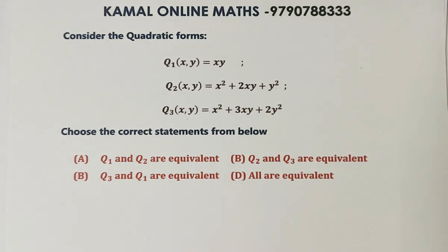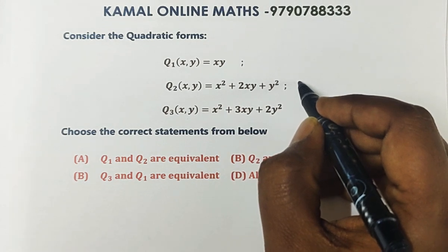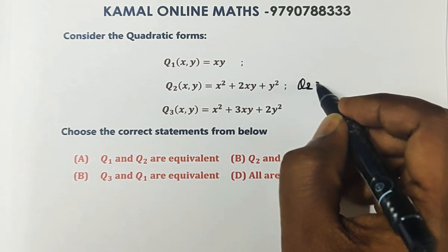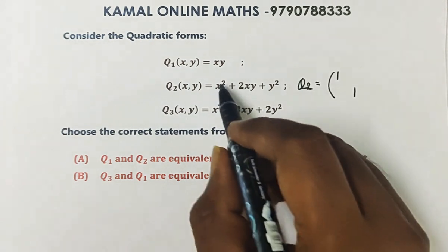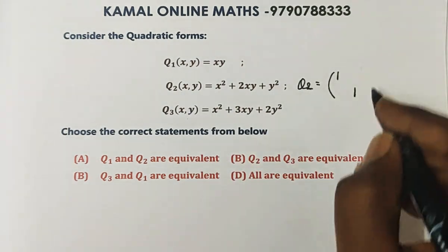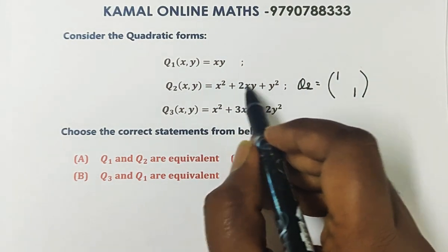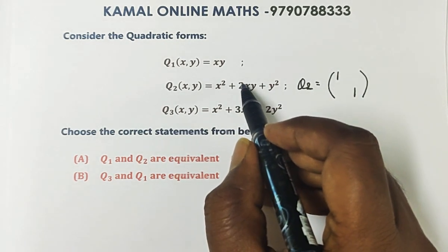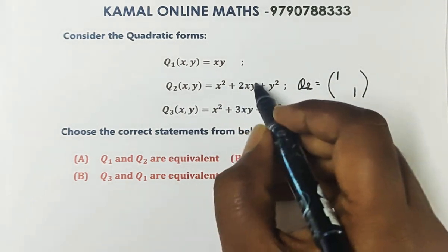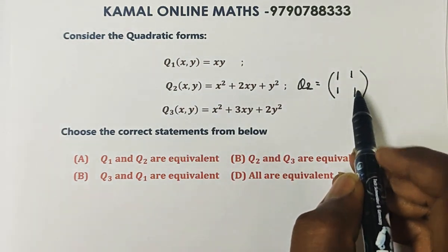Generally, whatever the number of variables, that is the size of the matrix. Single variable terms of degree two appear on the diagonal. For q2, x² goes on the diagonal, y² goes on the diagonal — it is a 2×2 matrix. The xy term is the off-diagonal (anti-diagonal). The coefficient of 2xy divided by 2 gives the off-diagonal value.